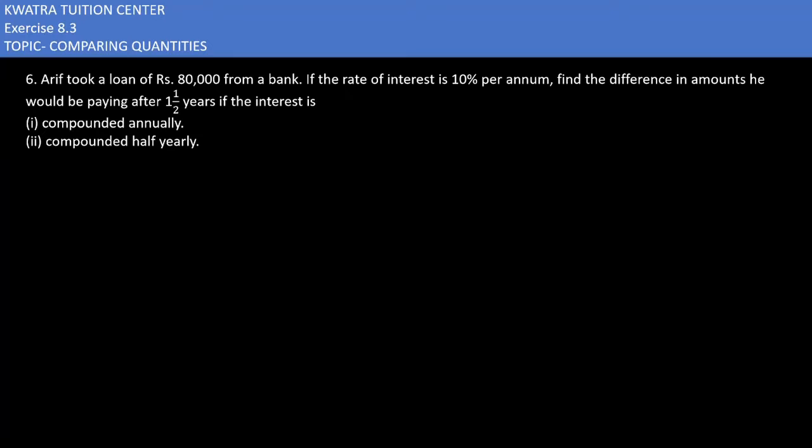In the first case, they've said you have to do an annual calculation. The principle would be 80,000, rate would be 10%, and the time period given to us is one and a half years.